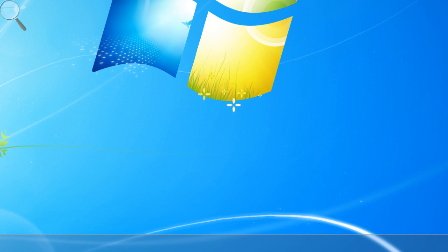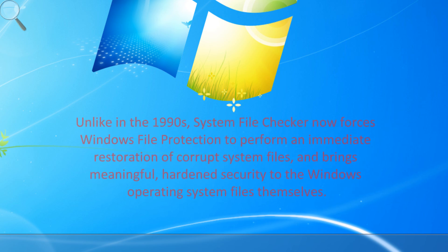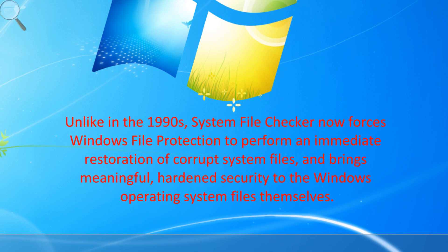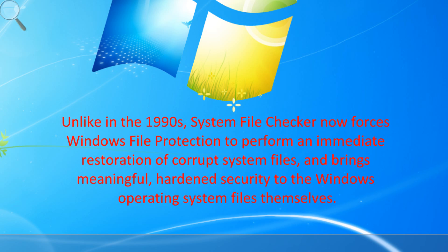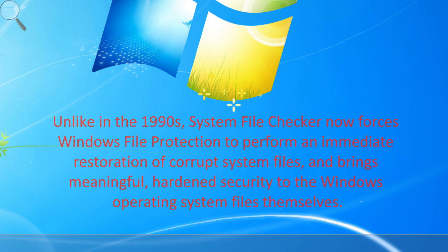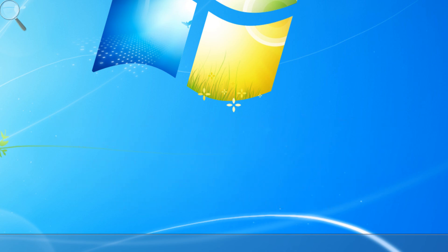In addition, the System File Checker utility, sfc.exe, was re-implemented as a more robust command line utility that integrated the Windows File Protection schema. Unlike the Windows 98 SFC utility, the new utility forces a scan of protected system files using Windows File Protection and allows the immediate silent restoration of system files from the DLL cache folder or installation media. One of the big problems in Windows XP was that whenever a problem was found via sfc.exe, you would always have to go back to the Windows XP installation media. A lot of people didn't have it and after a few service packs it started to become almost unusable.